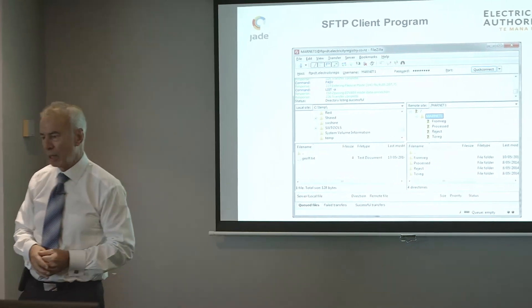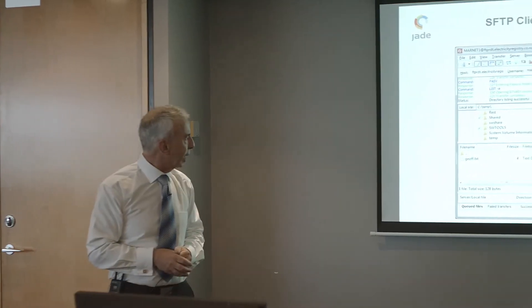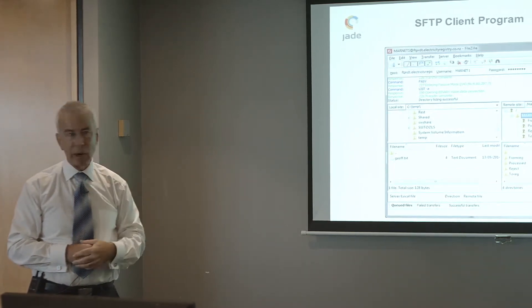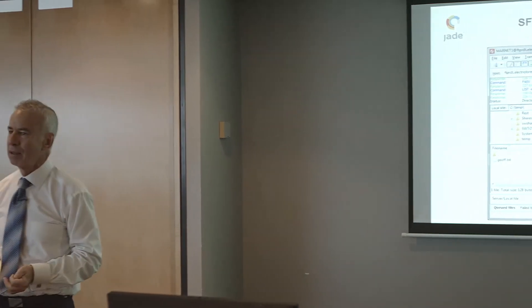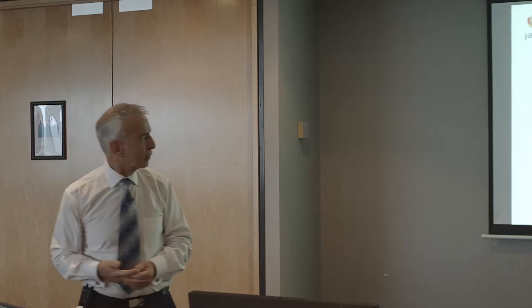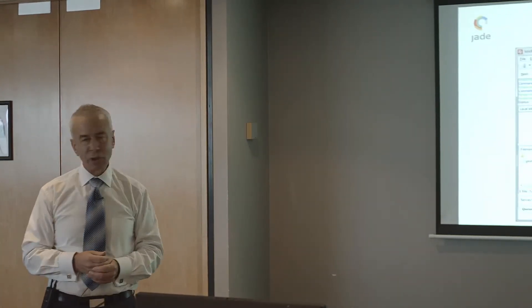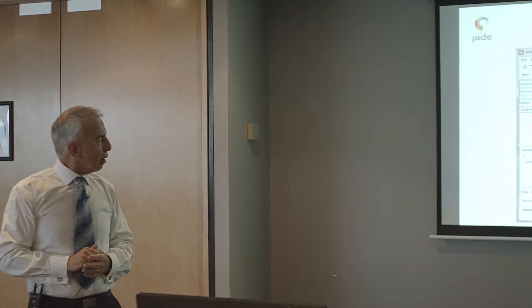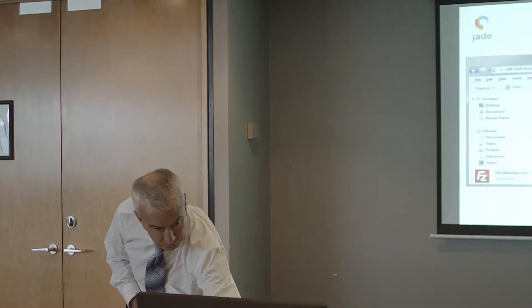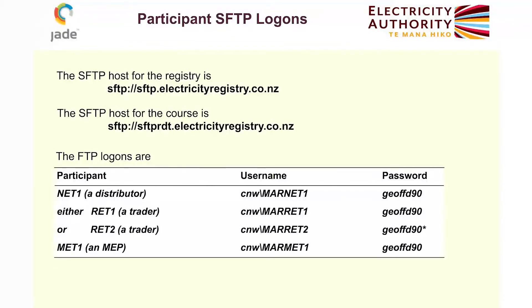The way we connect to the registry is by filling in the information along the top row. We have to say what the host is — it's a bit like using a browser. You have to say what machine you're wanting to connect to, supply a username and password, then click the connect button. We're going to be using the SFTP protocol rather than ordinary FTP, and I mentioned before that it's more secure.